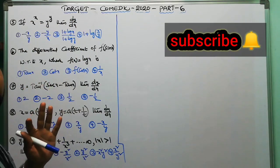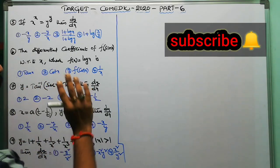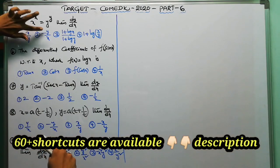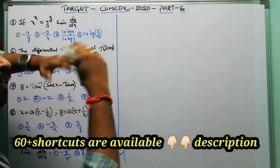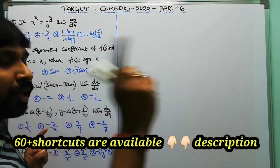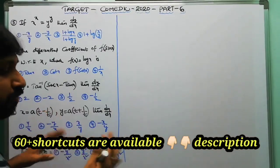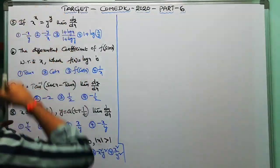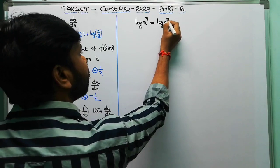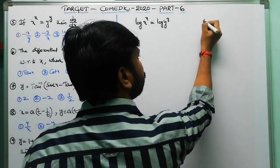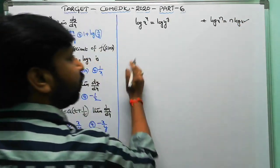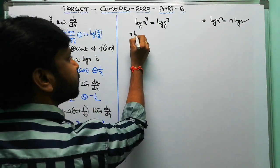Next question: if x^x equals y^y, find dy/dx. This is very simple. Whenever you have a function raised to a function power — whether the same or different — the logic is to take logarithms on both sides. Taking log on both sides: log(x^x) equals log(y^y). Using the formula log(x^n) equals n·log x, we get x·log x equals y·log y.